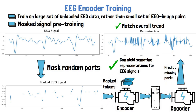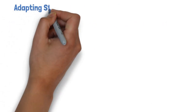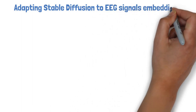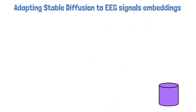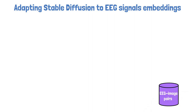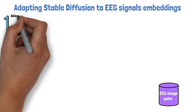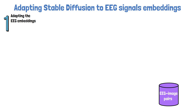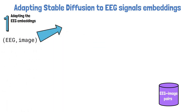However, these representations are not similar to what Stable Diffusion is used to seeing from CLIP. To overcome this gap, the researchers used a small dataset of EEG-image pairs, where each pair has a sample of EEG signal and an image that matches that signal. They used it in two different ways — one is for adapting the EEG embeddings to be more similar to CLIP.